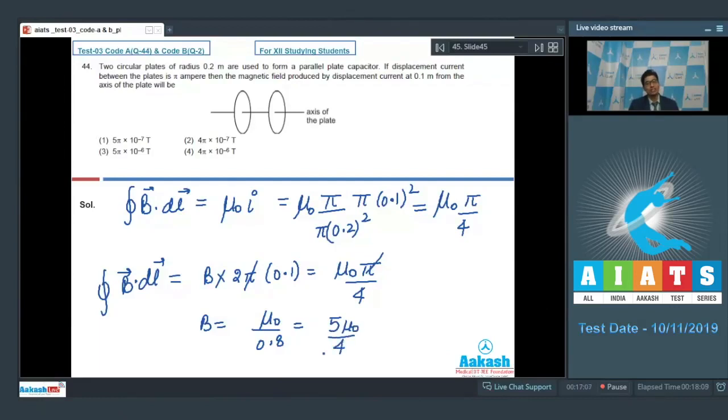Now, μ0 is equal to 4π×10^-7. On substituting this value, we get B = 5π×10^-7 tesla. And hence option number 1 for this question is our correct answer.